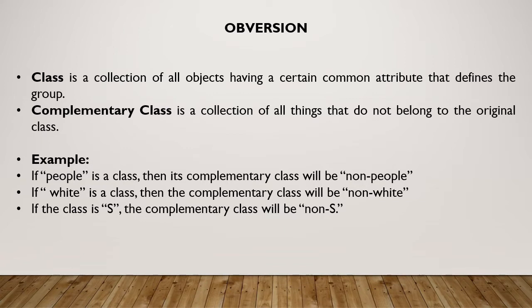The next type of immediate inference is obversion. Before understanding obversion, we are going to understand the notion of a class. A class is a collection of all objects having a certain common attribute, referred to as the class-defining characteristic. The complementary class, or simply complement, is a collection of all things that do not belong to the original class. So if 'people' is a class, then its complementary class will be 'non-people.' If 'white' is a class, then the complementary class will be 'non-white.' If the class is S, the complementary class will be non-S; if the class is P, the complementary class will be non-P.